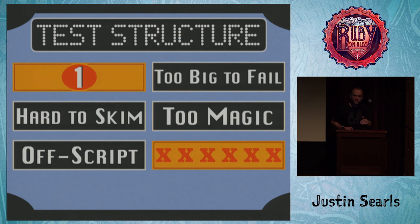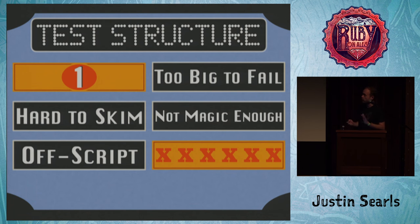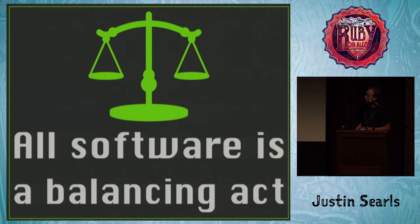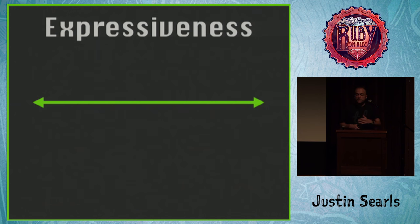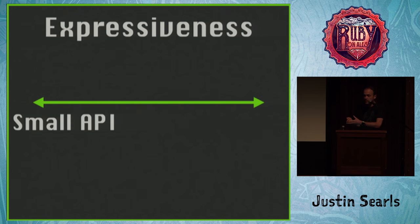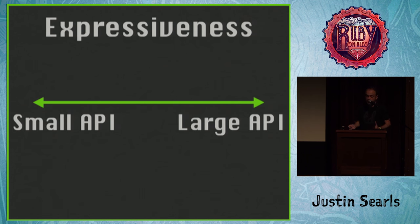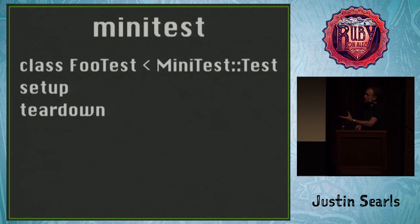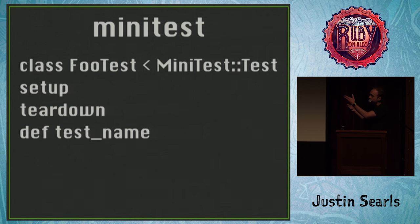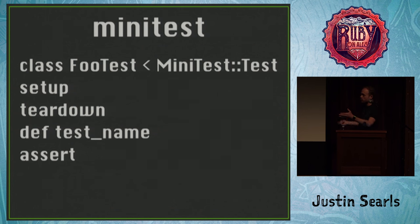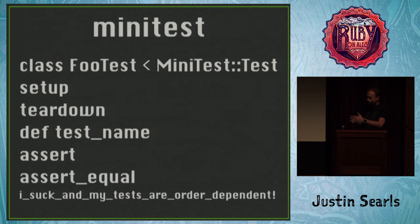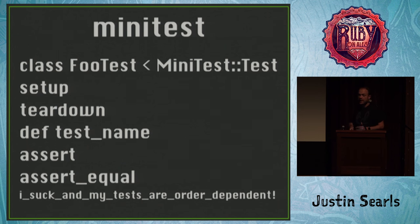The next thing about test structure: people hate tests that are too magic. Some tests struggle with not being magic enough by being too repetitive. But all software is a balancing act — testing libraries and their APIs are no different. They vary dramatically in expressiveness. Some have very small APIs requiring more heavy lifting; some have big APIs allowing more expressive tests but more to learn. Minitest is great because everything is a class, these are methods, the assertions are all really straightforward — it's a very small API, and that's its greatest strength.